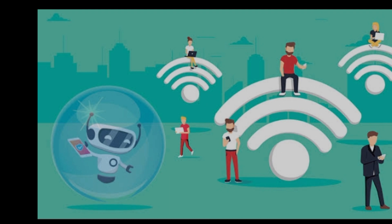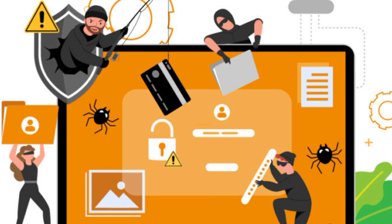Social engineering is another powerful attack vector. Cyber criminals manipulate people into divulging confidential information or giving physical access to systems. Each of these attack vectors takes advantage of a different aspect of human behaviour or technical vulnerability, which is why it's so important to remain aware and vigilant online.